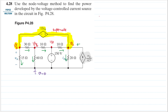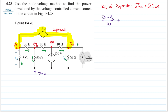Now let's do KCL at the supernode. KCL states that the sum of currents going in equals the sum of currents going out. From this supernode, there are two currents going in. The first one is (150 − Vc) divided by 10. The second one: V-delta equals Va, so we have Va divided by 4.5.